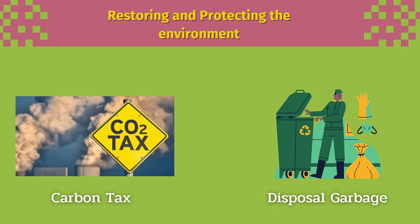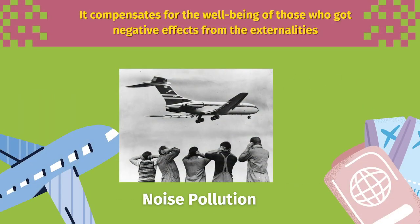The next point is compensating for the well-being of those who got negative effects from the externalities. A practical example is the internalization of noise surrounding an airport into ticket cost. Imagine the company asked a random group of people within a one-kilometer radius of an airport how much they would spend per year to no longer be subject to airline noise pollution. The number of persons living within one kilometer would be multiplied by the average amount spent on noise reduction. This sum could be added to all plane tickets purchased within a year for flights departing and landing at that airport, and when broken down to individual tickets, a higher ticket price would internalize the external effect of noise.